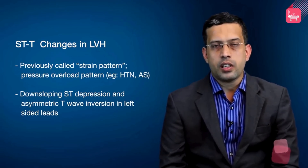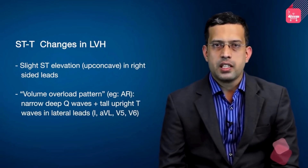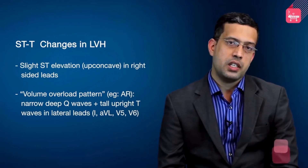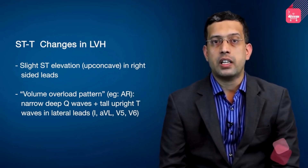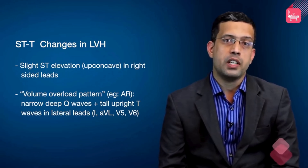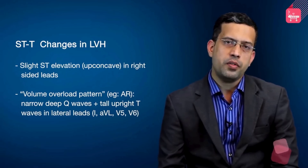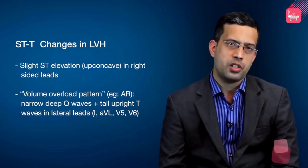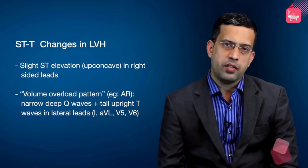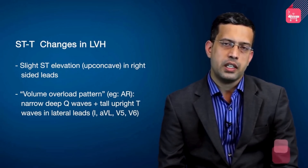Conversely, on the right-sided leads you can find slight ST elevation that is up-concave in appearance. This contrasts with ST elevation MI, which typically causes up-convex ST elevations. This has been classically called the pressure overload pattern because it's found in conditions such as aortic stenosis. There is also a volume overload pattern in LVH, classically found in conditions such as aortic regurgitation.